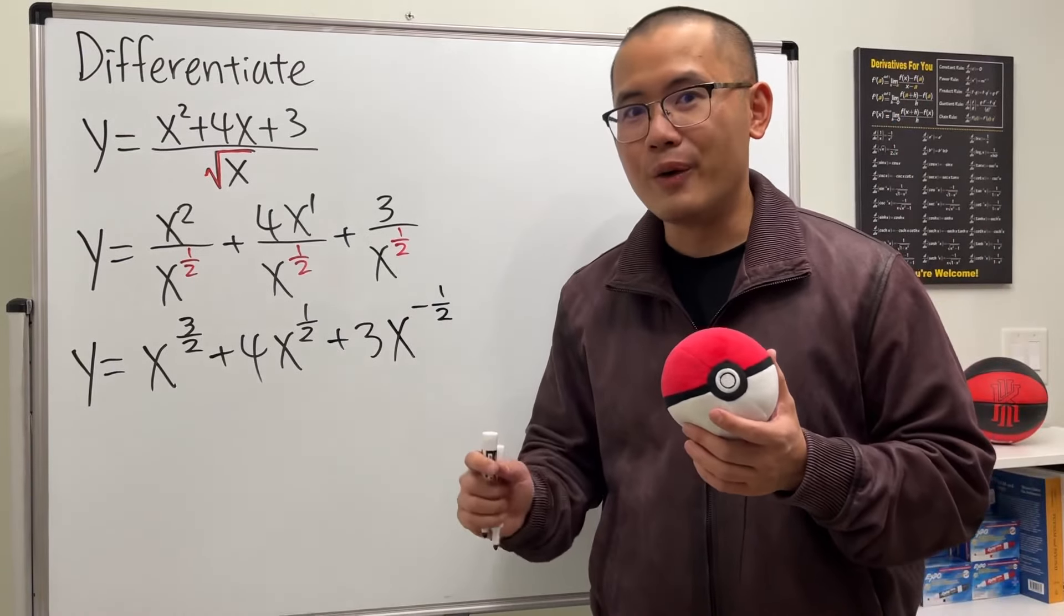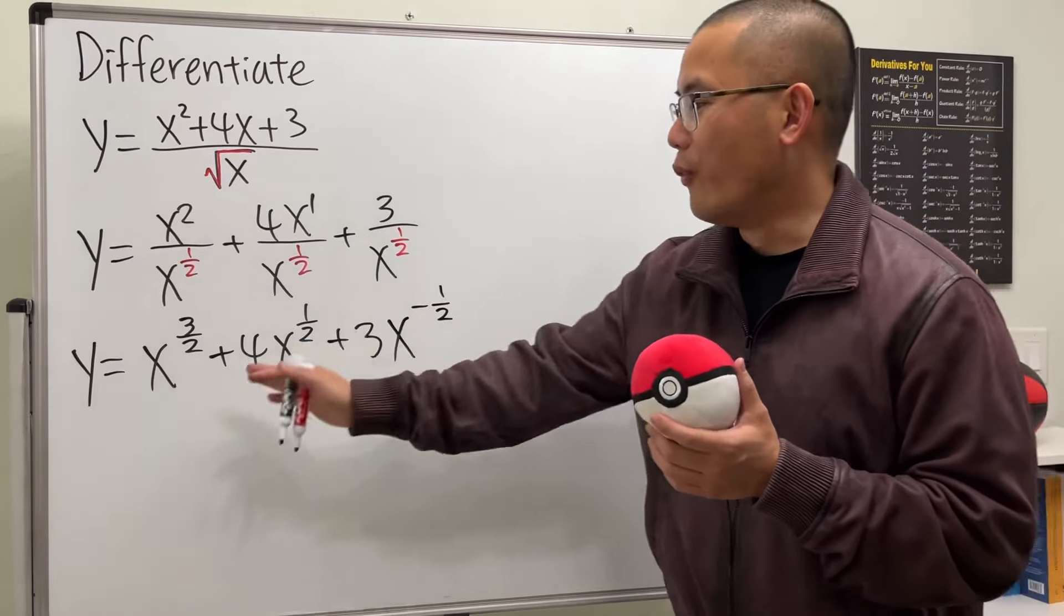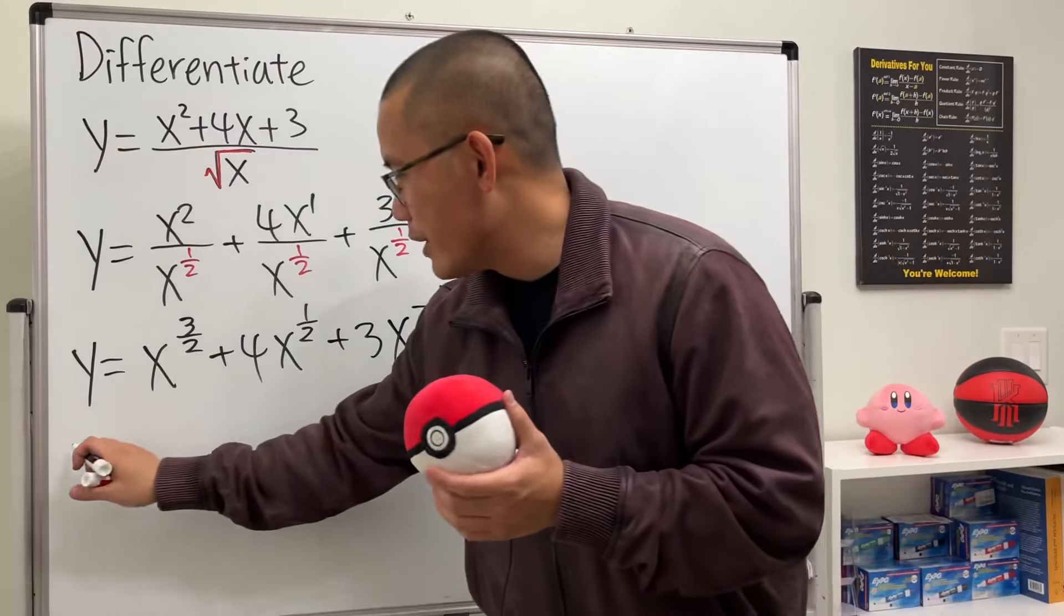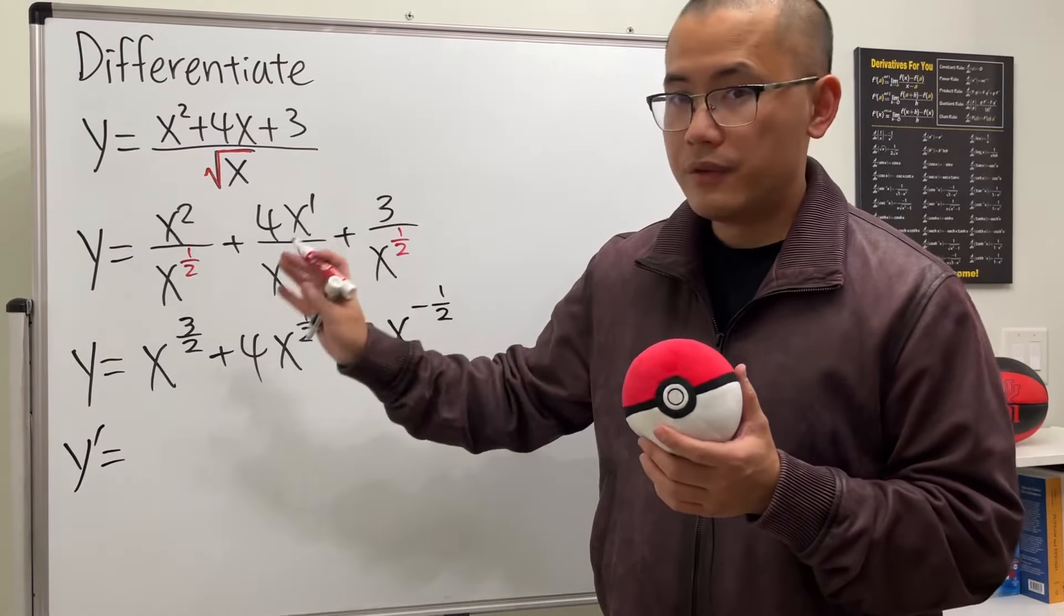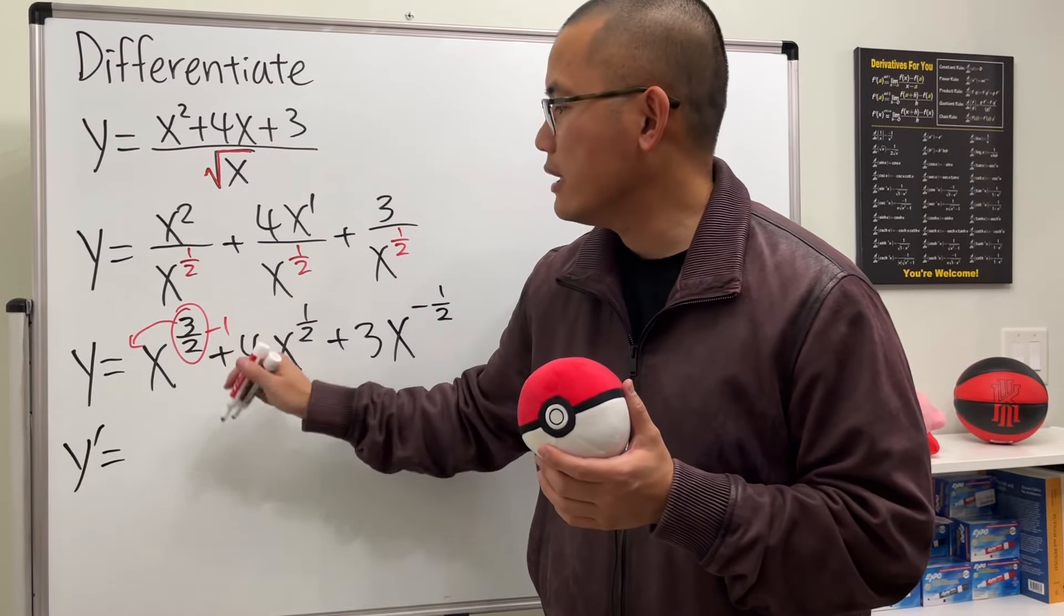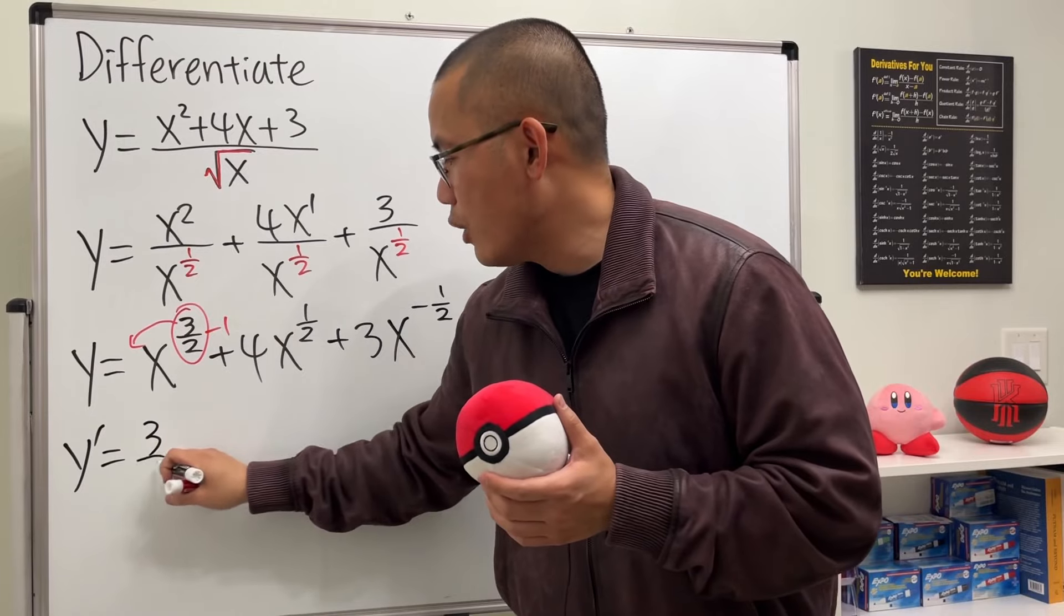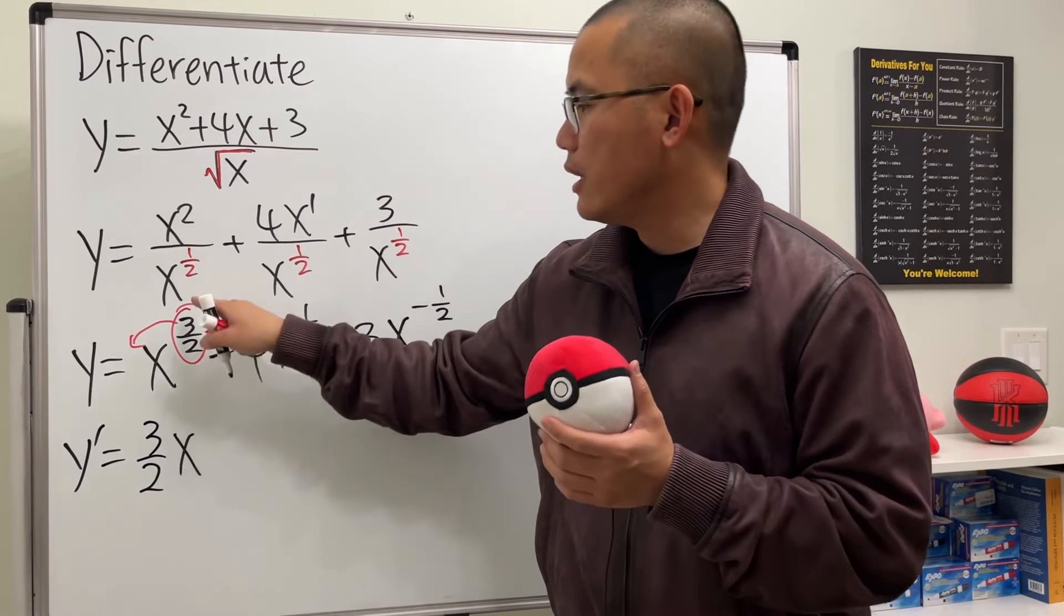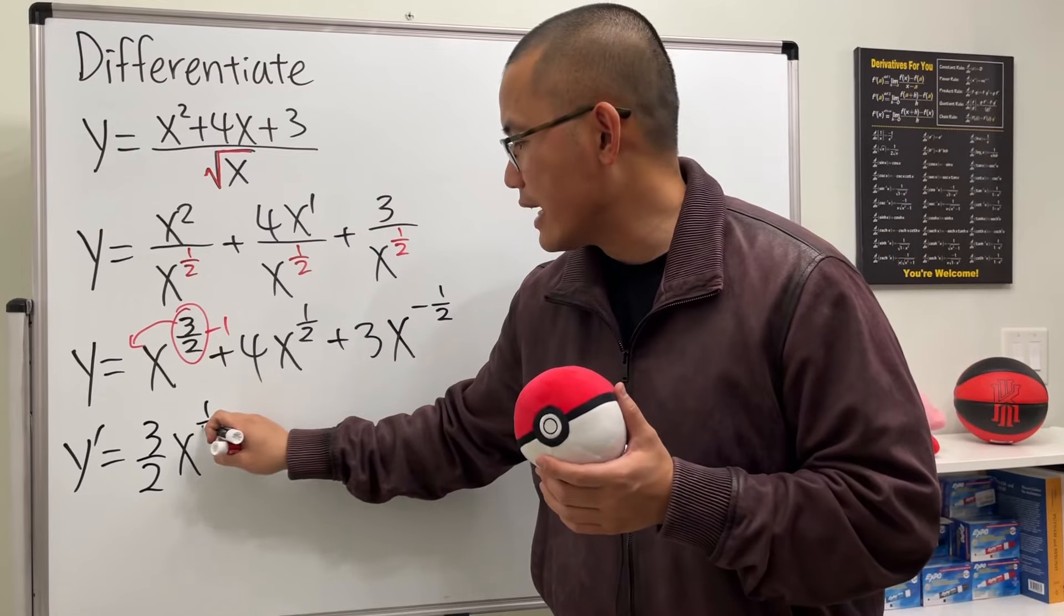All right. Now, we can do the power rule for each term. So let me write down y prime for the derivative. For the first term, we will bring the power to the front and then minus 1. And we will get 3 over 2 x to the 3 over 2 minus 1 is 1 half.